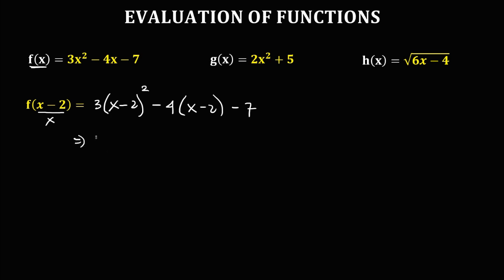Simplifying: we need to expand (x minus 2) squared using the SMS method — S is the square of the first term, so x squared. M is multiplication: 2 times negative 2 is negative 4, times x, giving negative 4x. The last S is the square of the second term: 2 squared is 2 times 2, that's 4.